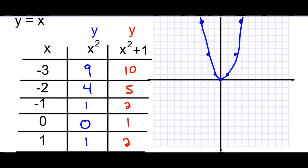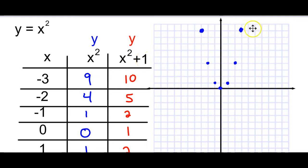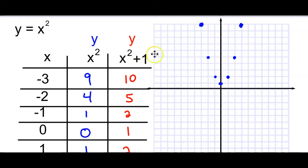This is where the bead method is really helpful. If you take the plus 1 shift, each bead gets shifted up 1. The negative 3 coordinate shifts up 1, the negative 2 coordinate shifts up 1, and so on. Shifting all of them up, I've now graphed x squared plus 1 for all the plotted points. Drawing in the curve, it's shifted up 1.